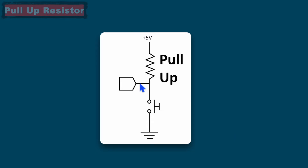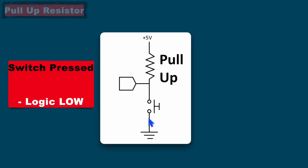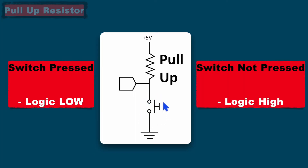For a pull-up resistor, one end of the resistor is connected to logic high — here it is +5 volts — and from the other end of the resistor we take the input. This resistor is called a pull-up resistor because it is pulling up the input to the high state. From this point, we read the input of the switch, whether it is pressed or not. When the switch is pressed, it will make a short circuit and we will get logic low at the input. But when the switch is not pressed, it will not make a short circuit, and it will be at logic high state as it is pulled up to 5 volts.